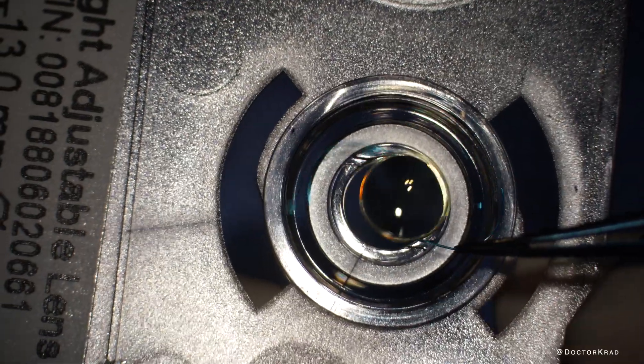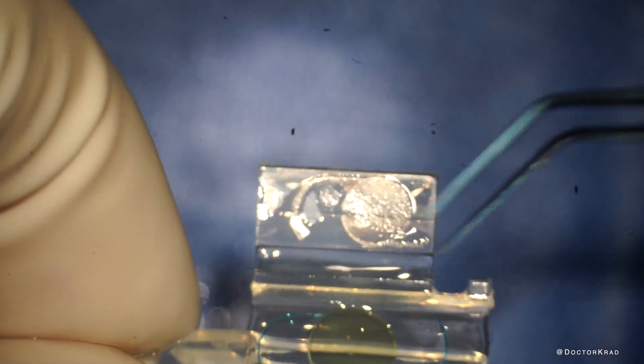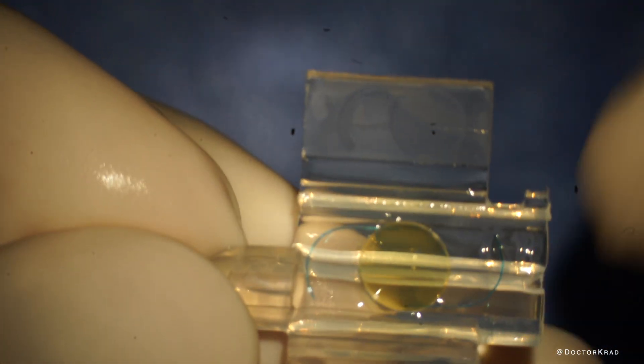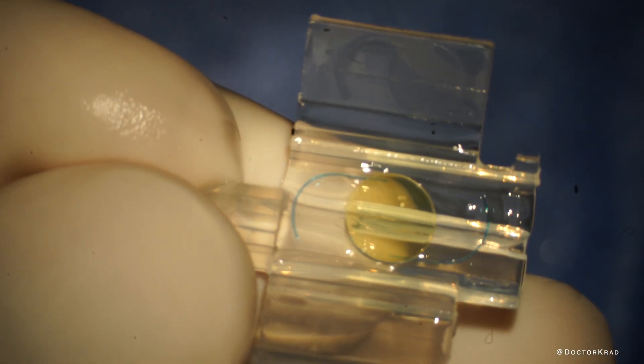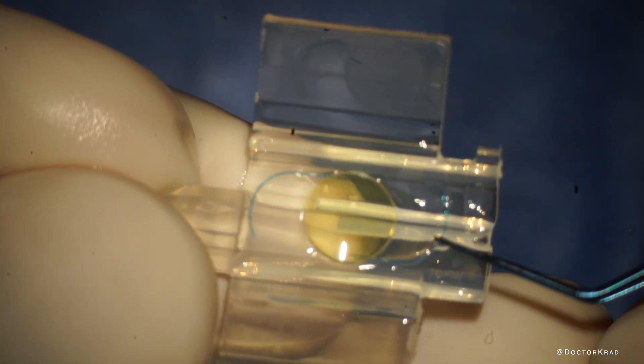Then you grab the light adjustable lens by its haptic and you gently lay it down on the cartridge. You want to make sure it's oriented just like the image of the IOL on the flap of the cartridge. And you want to make sure that the lens is seated forward. Let the leading haptic touch the nozzle all the way forward to the left.